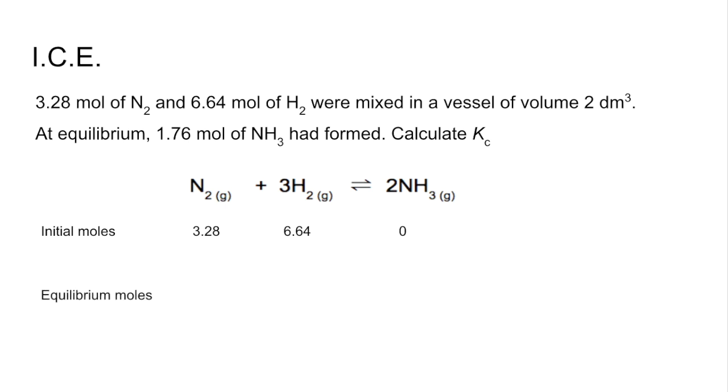We then skip to the equilibrium moles, because we're told that at equilibrium, we've got 1.76 moles of ammonia. So there's been a change in moles of plus 1.76, or an increase of 1.76 for the ammonia. So now we need to bring in the mole ratios. So if we look at the nitrogen, so for nitrogen to produce 1.76 moles of ammonia, half as much needs to react, and so it's going to drop by 0.88.